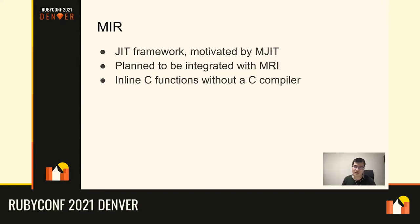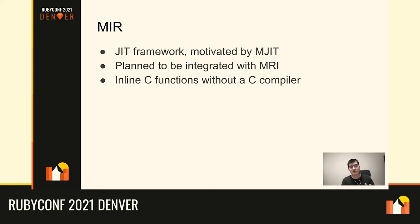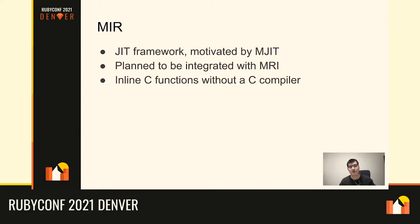The main characteristic of the MIR framework is that if you use it, you can inline C functions without the C compiler, as long as you link the library to the interpreter. This avoids invoking another process. Currently, MJIT executes JIT compilation via a C compiler process, which sometimes causes trouble because those processes can interact with Ruby methods through locking — potentially causing deadlock bugs from process management.